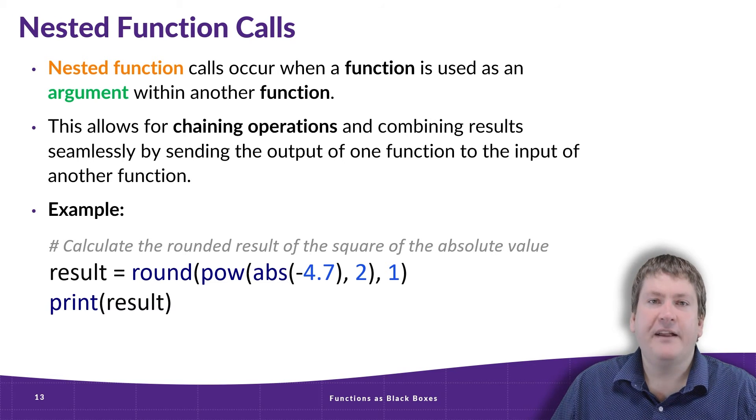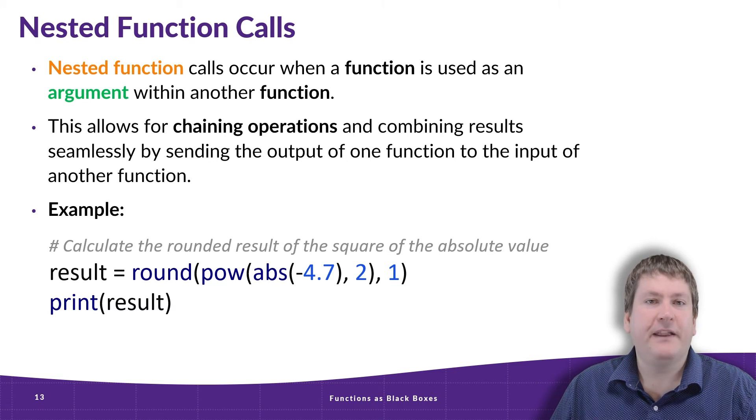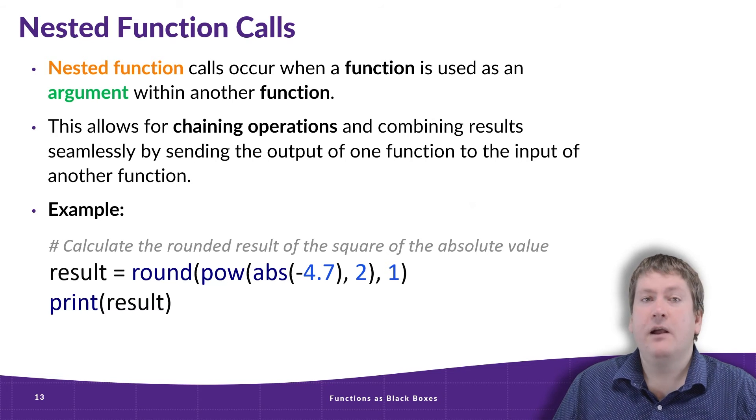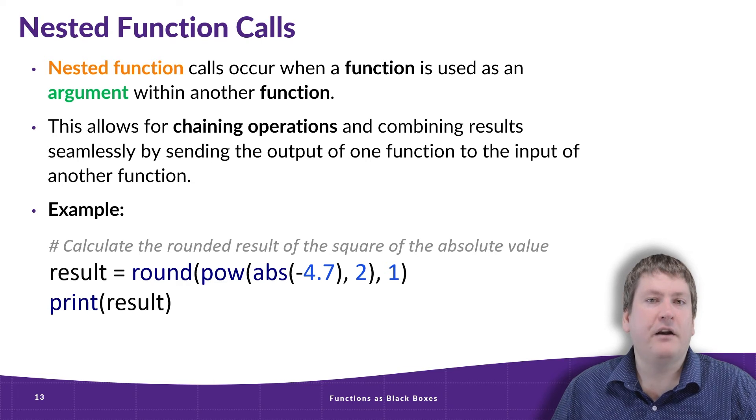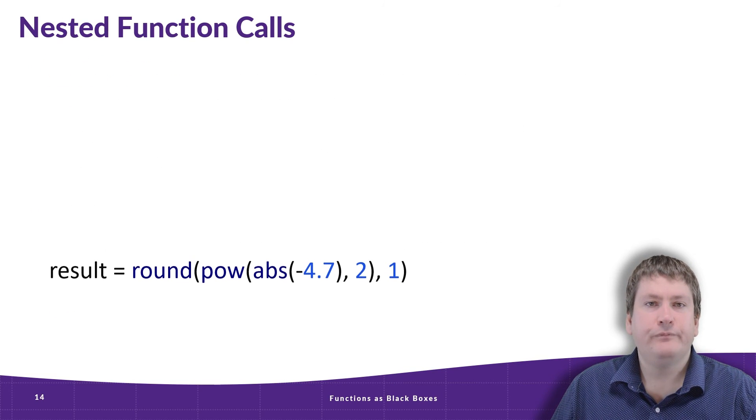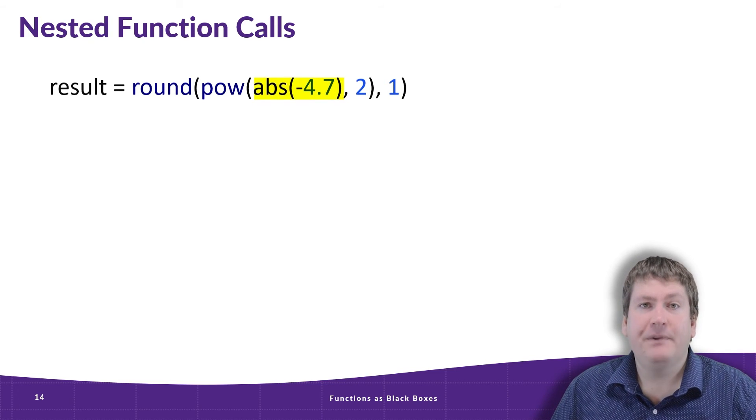Here we have a line of code that has a few function calls that are nested within each other. In the center, we have the absolute function, then we have power, then round. And what this is doing is basically just rounding the result of the square of an absolute value. So let's break this down a little bit.